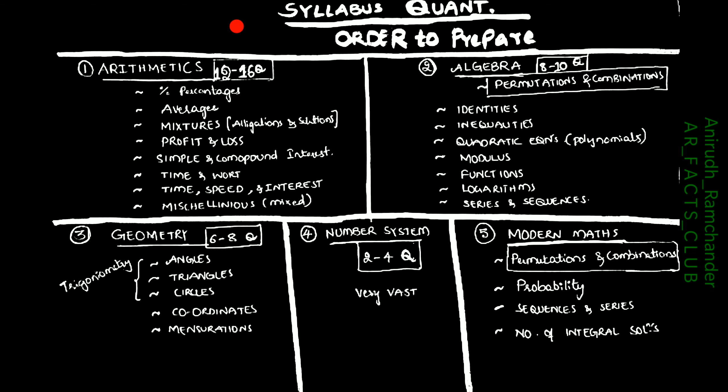Coming to the syllabus for quantitative aptitude, the order to prepare is Arithmetics, Algebra, Geometry, Number System, and Modern Maths. In Arithmetics, you will be covering 12 to 16 questions and the syllabus includes percentages, averages, mixtures, allegations and solutions, profit and loss, simple and compound interest, time and work, time, speed, distance, and miscellaneous. Miscellaneous contains questions of mixed topics.